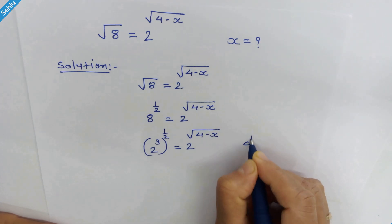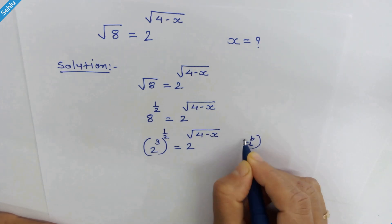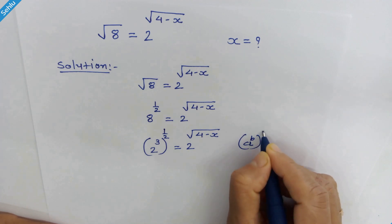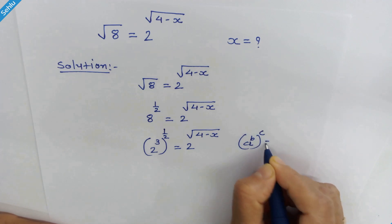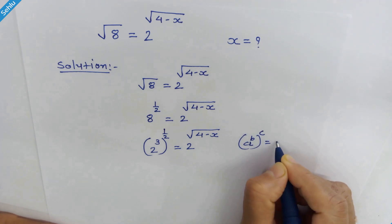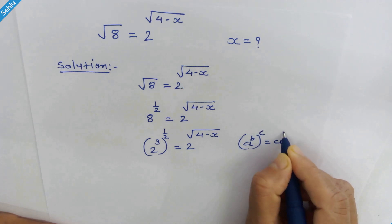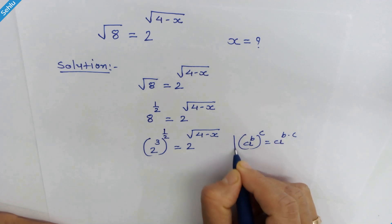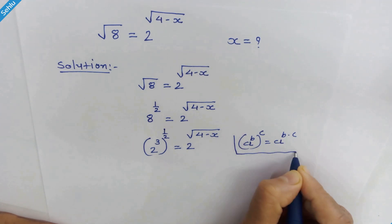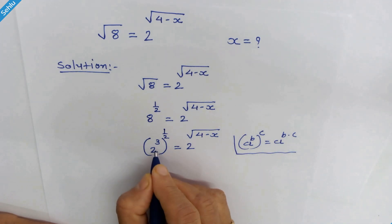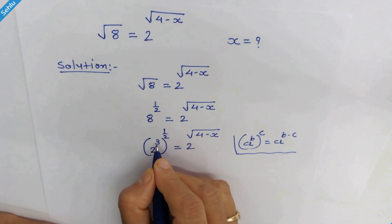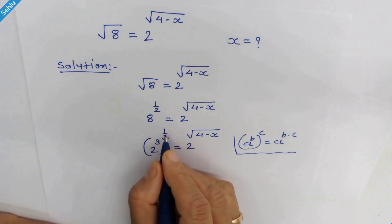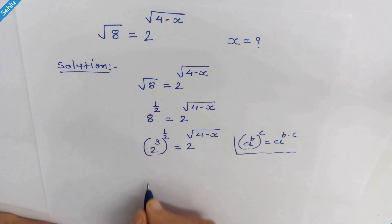If we have a raised to b, whole raised to c, then it will be a raised to b times c. We will apply this rule here, so 3 and 1 upon 2 can multiply.